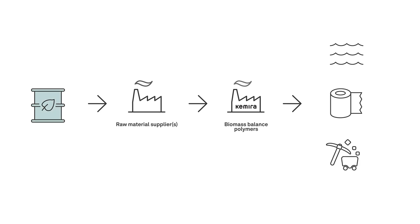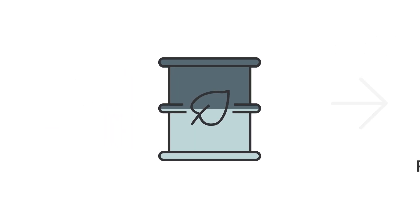Our biomass balance polymers originate from both renewable and fossil-based feedstocks, maintaining the same quality and performance you expect. Over time, the share of renewable feedstocks increases and fossil feedstocks are reduced.